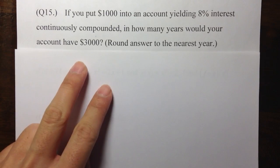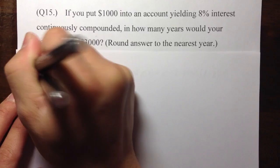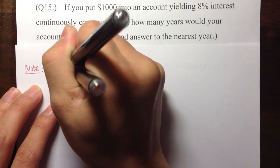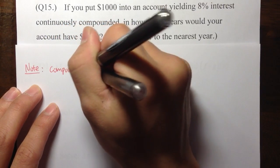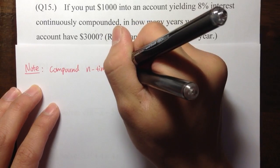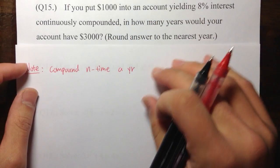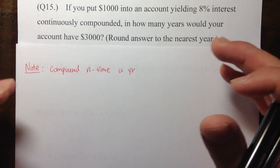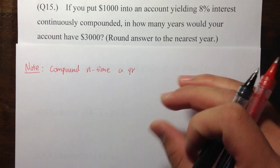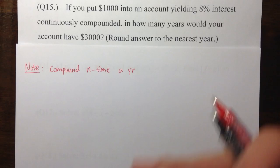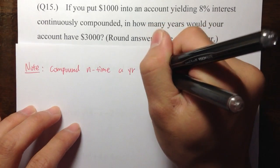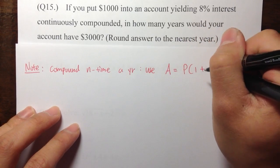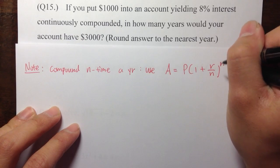There are actually two types of formulas we have seen, so let me write them both down. If the question says the account was compounded n times a year — for example, monthly means n equals 12, daily means n equals 365 — then we use the formula: A equals P times (1 plus r over n) raised to the n times t power.